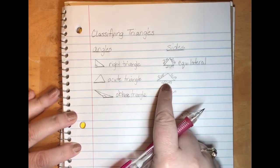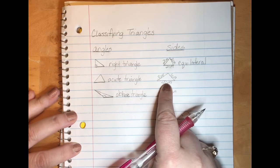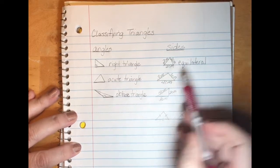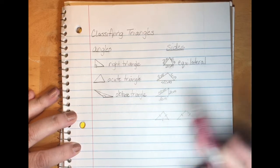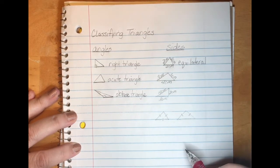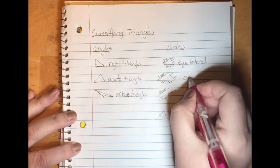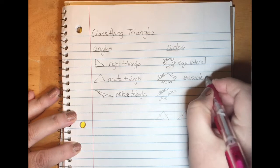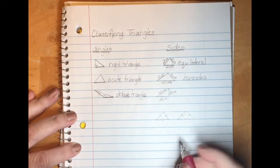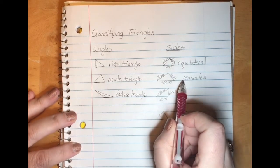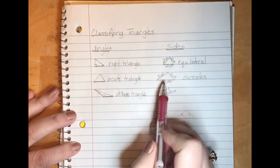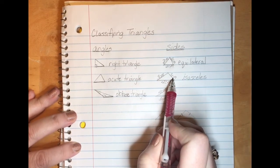When we have a triangle with two matching side lengths — it could be any two sides, it doesn't matter which two as long as two of the side lengths are the same — we call this an isosceles triangle. The way I like to remember isosceles is it starts with an I and you have two I's. Isosceles triangles have two side lengths that are the same.